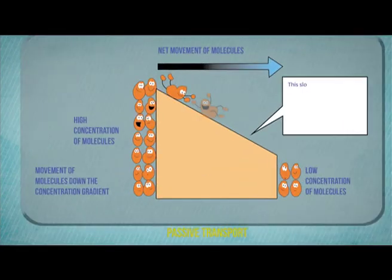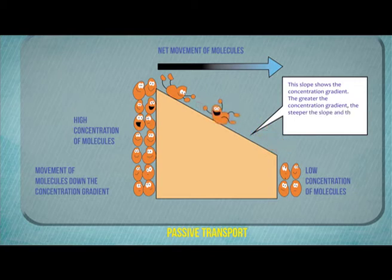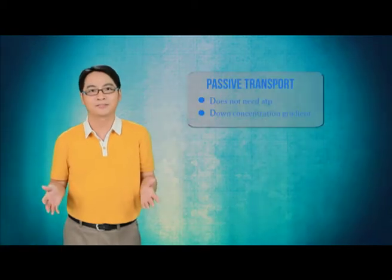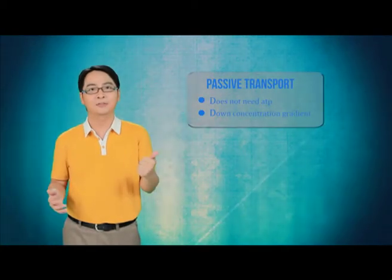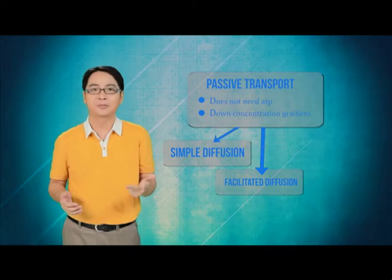In passive transport, the substances move across the plasma membrane from a region of higher concentration to a region of lower concentration. The substances are moving down the concentration gradient. This process does not need energy. There are three types of passive transport: simple diffusion, facilitated diffusion, and osmosis.